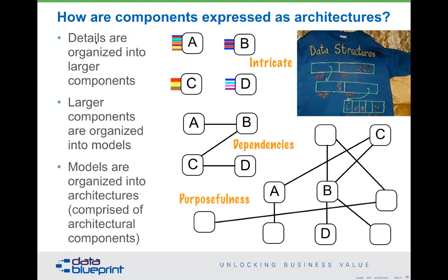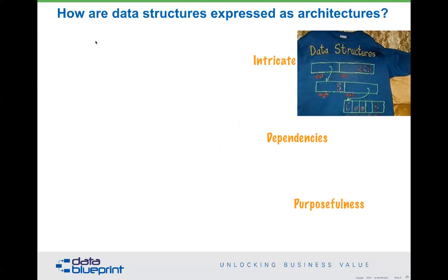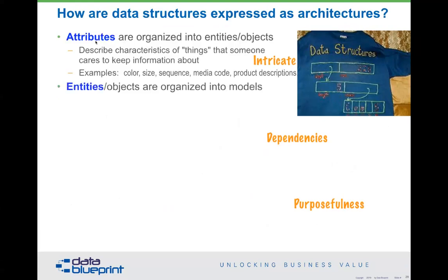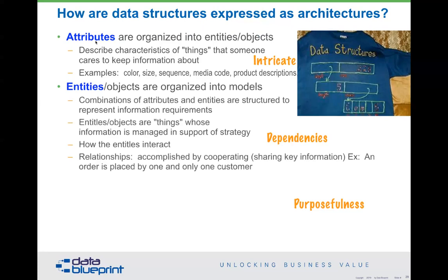Those models are organized into architectures comprised of various architectural components, and this is where the word purposefulness comes in. If we don't have a purpose for it, then any answer is the correct answer. We express data models as intricate pieces showing dependencies, optionalities, and purposefulness. The small things we organize are called attributes. We organize attributes into entities and objects. These attributes describe the characteristics of things that someone cares to keep information about — for example, color, size, sequence, media code, product descriptions.